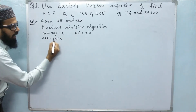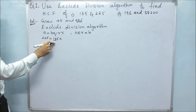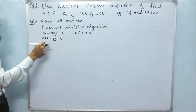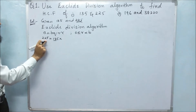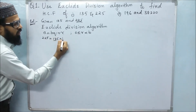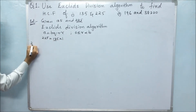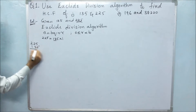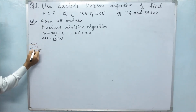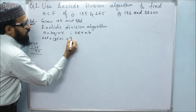If we multiply 135 with 2, we get 270, which is more than 225. So we cannot take 2. We go with 1, so 135 ones is 135. Subtracting 225 minus 135, we get 5 minus 5 is 0, 12 minus 3 is 9, so the remainder is 90.